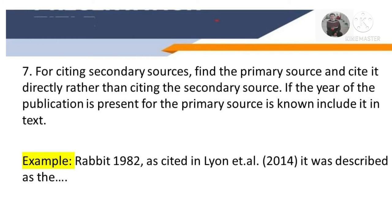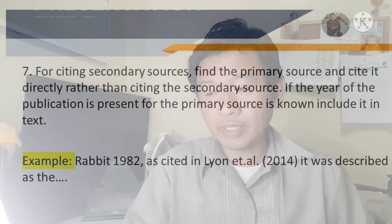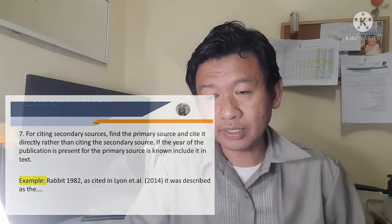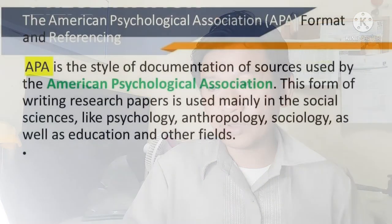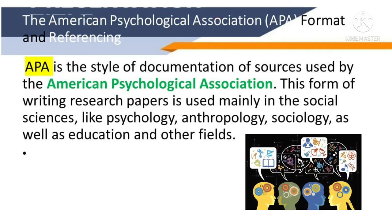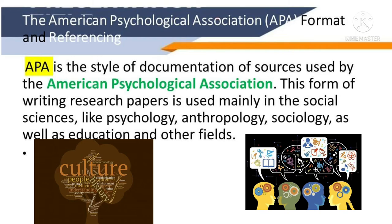For citing secondary sources, find the primary source and cite it directly rather than citing the secondary source. If the year of publication for the primary source is known, include it in the text — for example, Rabbit (1992, as cited in Lion et al., 2014). APA is the style of documentation of sources used by the American Psychological Association. This form of writing research papers is used mainly in the social sciences like psychology, anthropology, and sociology, as well as education and other fields.